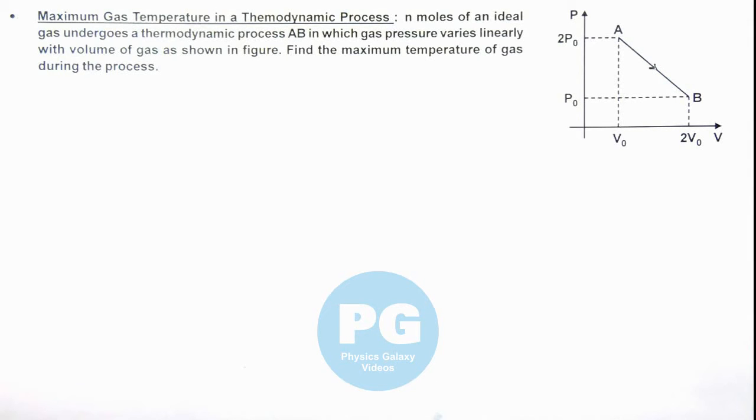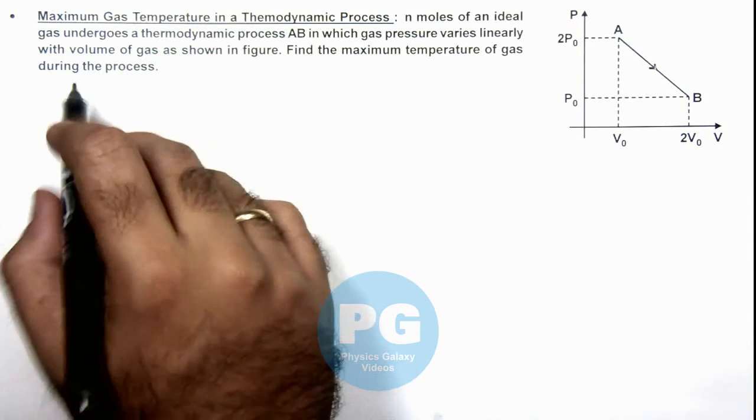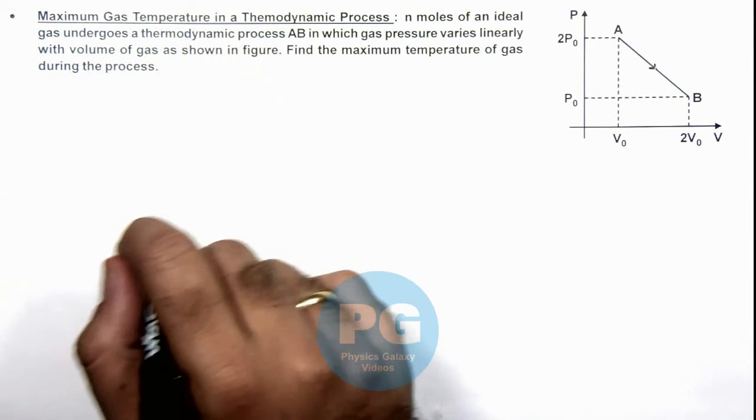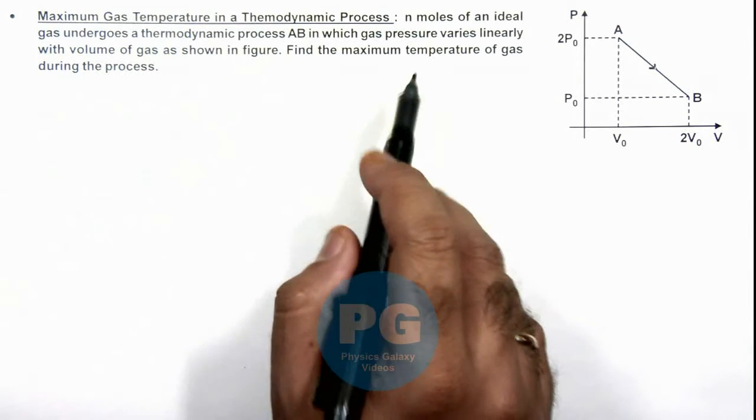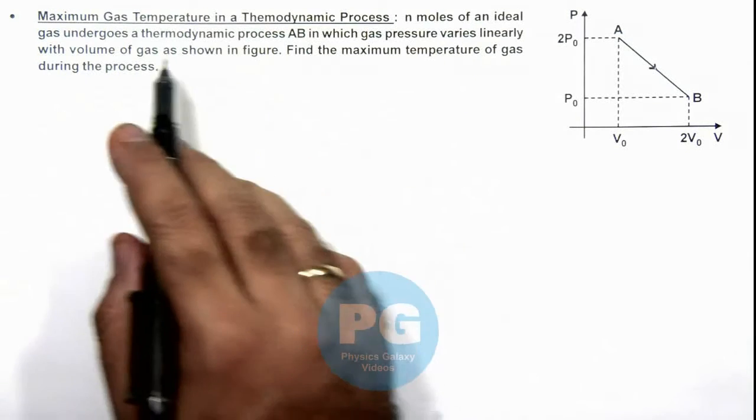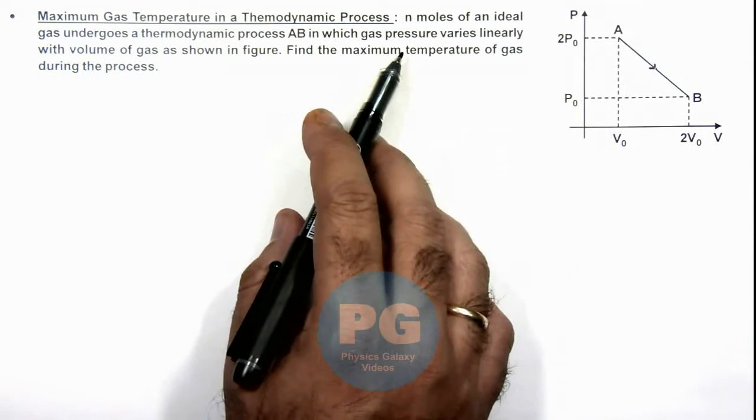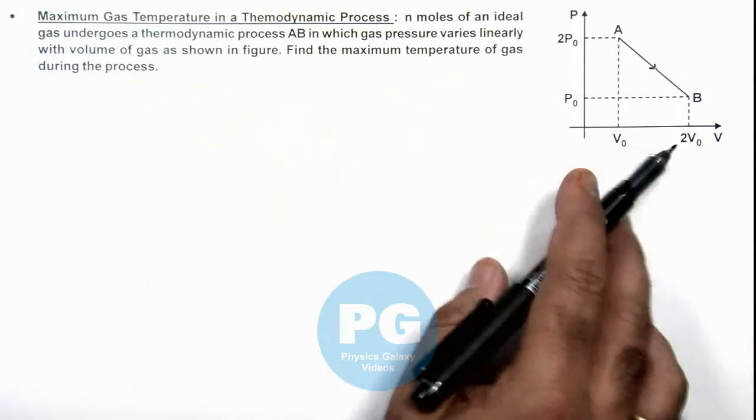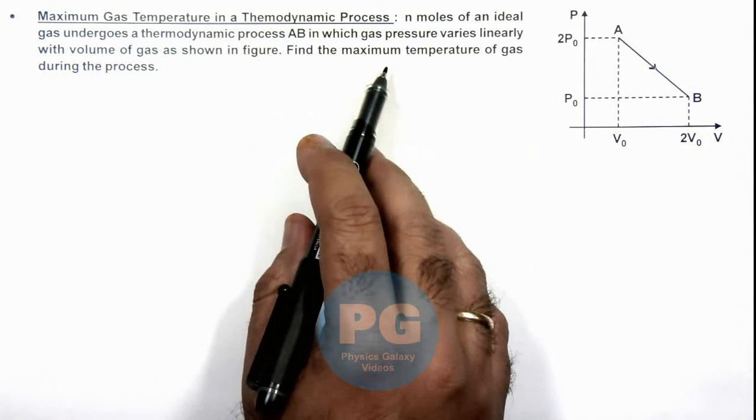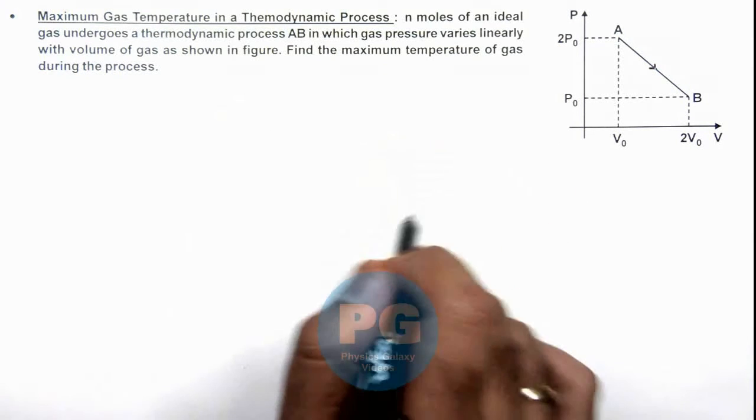In this illustration we'll analyze the maximum gas temperature in a thermodynamic process. We are given that n moles of an ideal gas undergoes a thermodynamic process AB in which gas pressure varies linearly with the volume of gas, and we are required to find the maximum temperature of gas during the process.